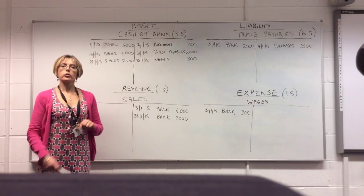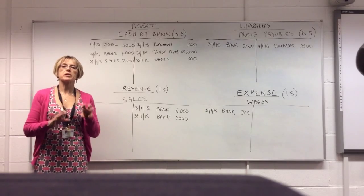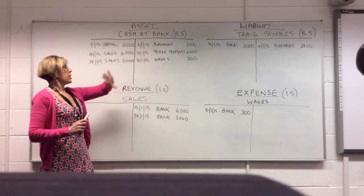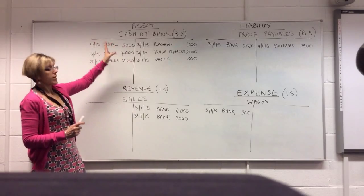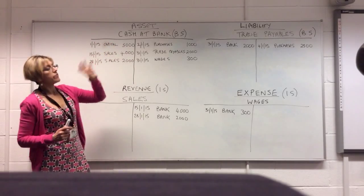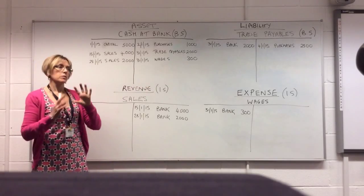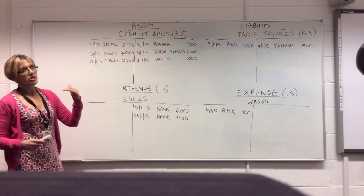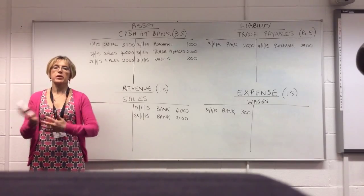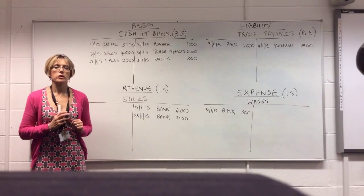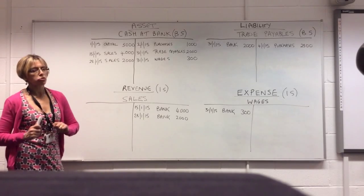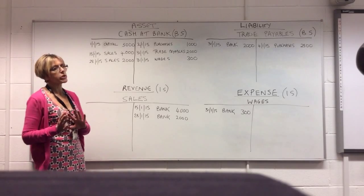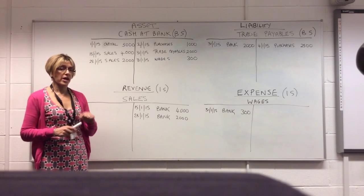Last week we looked at the basics of making debit and credit entries into our T accounts. We know that for every item, every account has its own T account — every asset, every liability, every bit of revenue or expense, plus capital. They all have their own individual T accounts that we record our accounting entries in. Remember that for every debit there has to be an equal credit. This week we've got to go to the next step, which is closing off the accounts, or balancing the accounts, at the end of the accounting period.